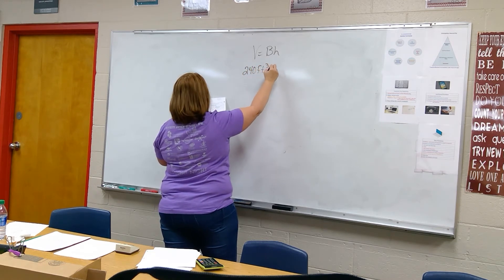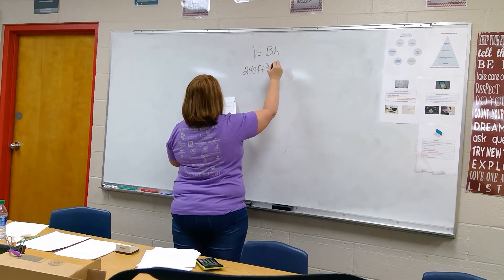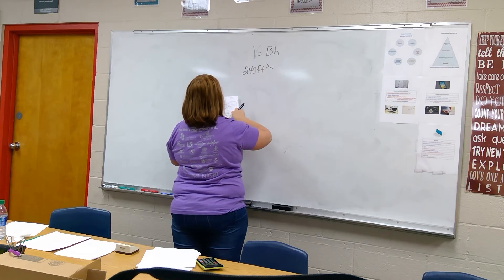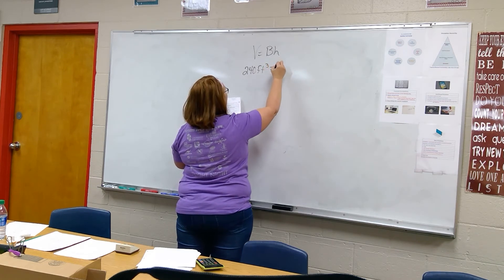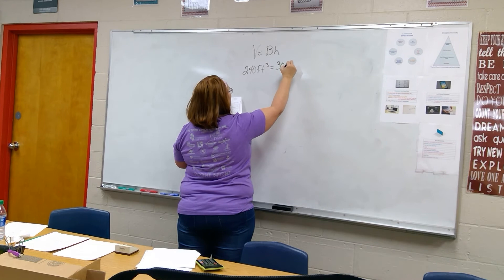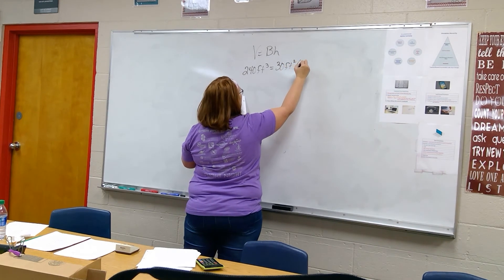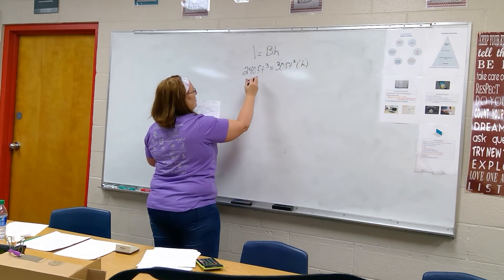It says in the problem it holds 240 cubic feet. Feet cubed equals, says the base of the shipping crate is 30 square feet times h, times h, so flip it around.